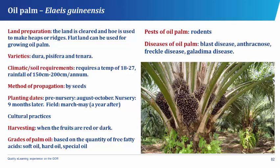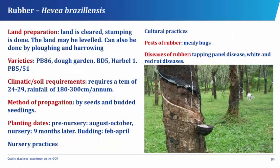The rubber has its botanical name as Hevea brasiliensis. Rubber is the only popular latex crop which produces white sticky liquid used in plastic industries. It belongs to the plant family Euphorbiaceae. In the land preparation of rubber, the land is cleared, stumping is done, and the land may be leveled, or it can be done by plowing and harrowing.